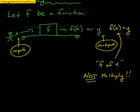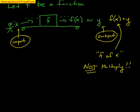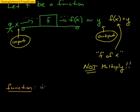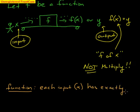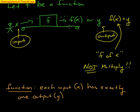Something else to note is the definition of a function. Notice how many x's I put in — I put in one x. And when the one x goes through, you only get one f of x, or you only get one y. This is exactly the definition of a function: each input — we'll call it x — has exactly one output, and we'll call that y. One y for every x.